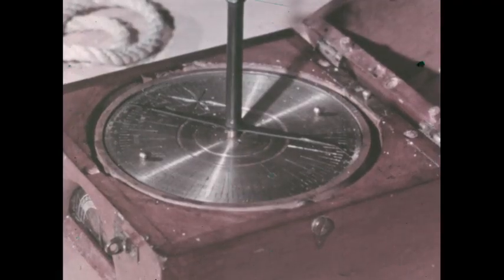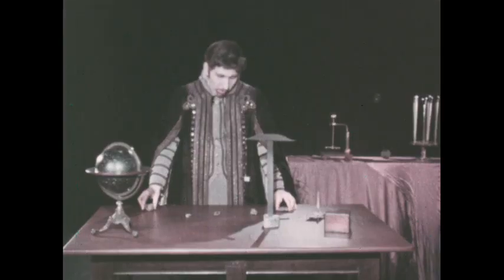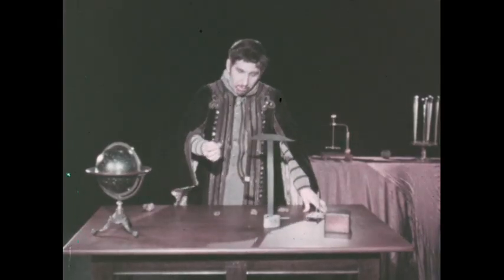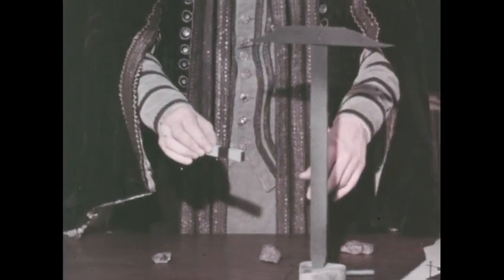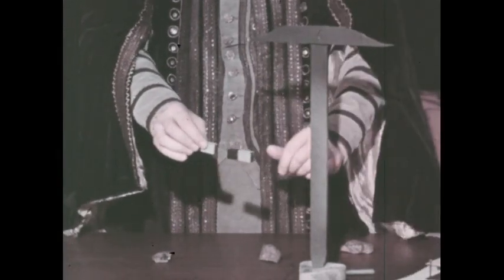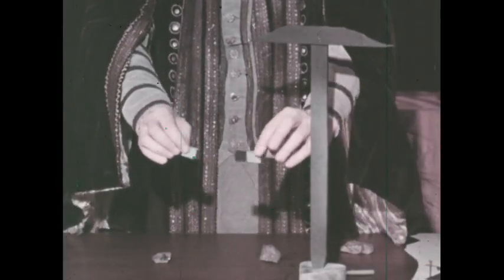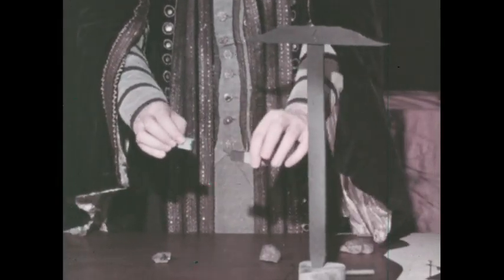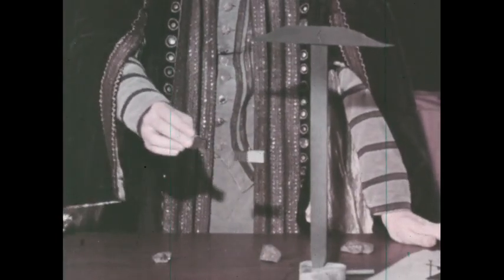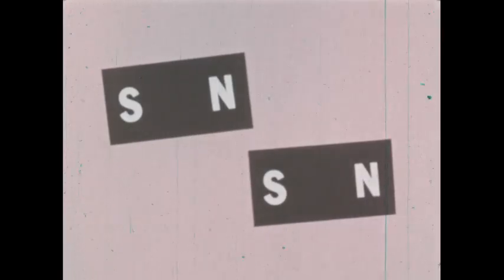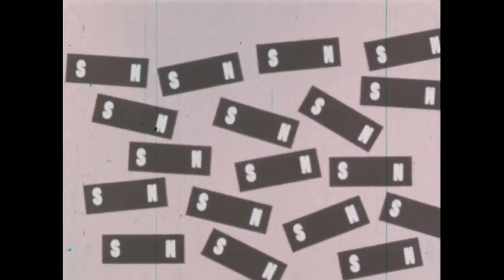Later, mariners used magnets to make compasses. In the 16th century, Dr. William Gilbert, physician to Queen Elizabeth the First, made a study of magnetism. He found that unlike poles attract and that like poles of magnets repel one another. He found that when a magnet is broken, each of the pieces acts like a magnet. Even if a magnet is broken into a thousand pieces, each piece will act like a magnet.